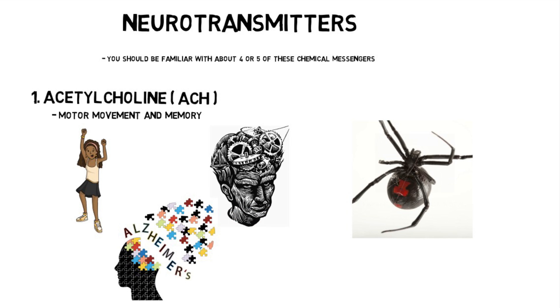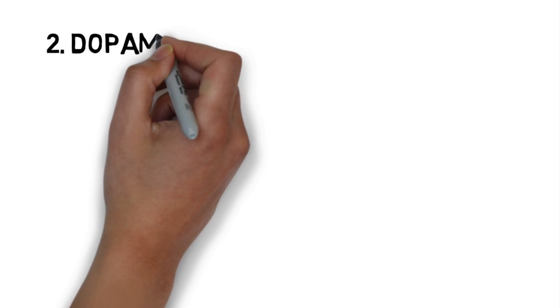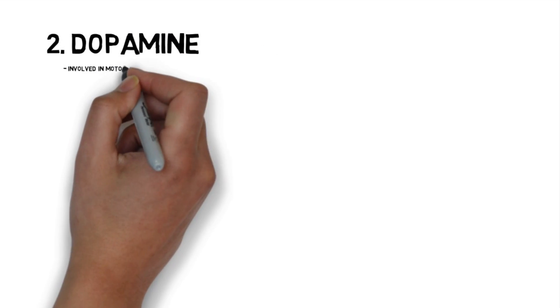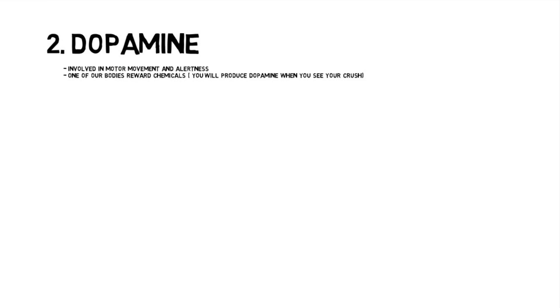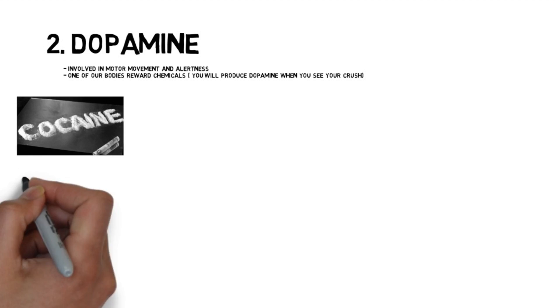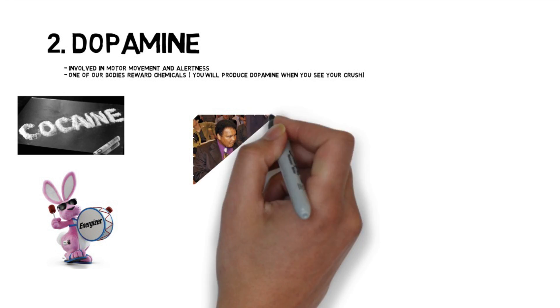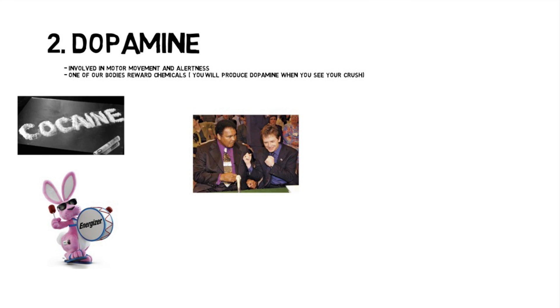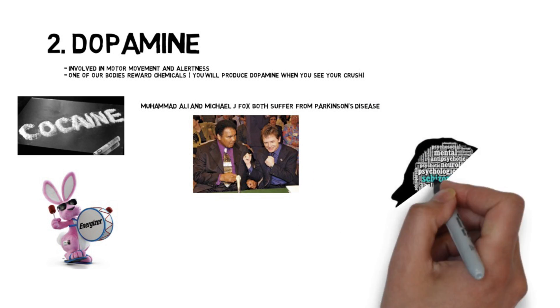A second neurotransmitter you should probably be aware of is called dopamine. Dopamine is involved in things like motor movement and alertness. Drugs like cocaine increase dopamine levels in our body, making us feel very energetic because it's a stimulant. Lack of dopamine has been linked to Parkinson's disease. And actually an overabundance of dopamine has been linked to schizophrenia.